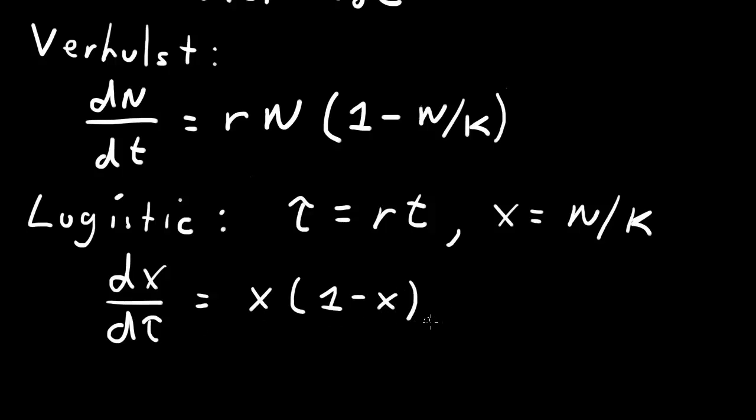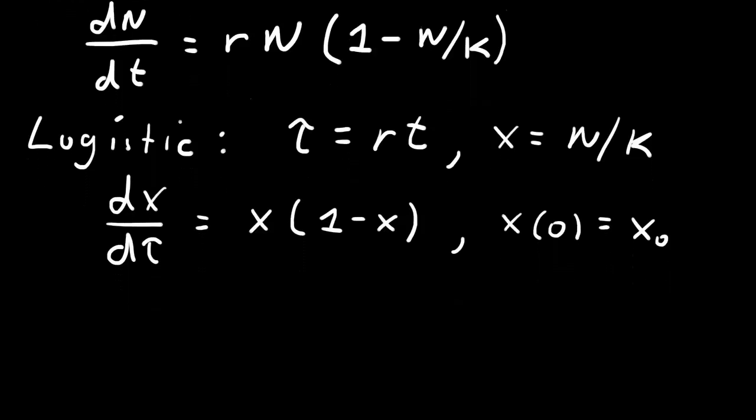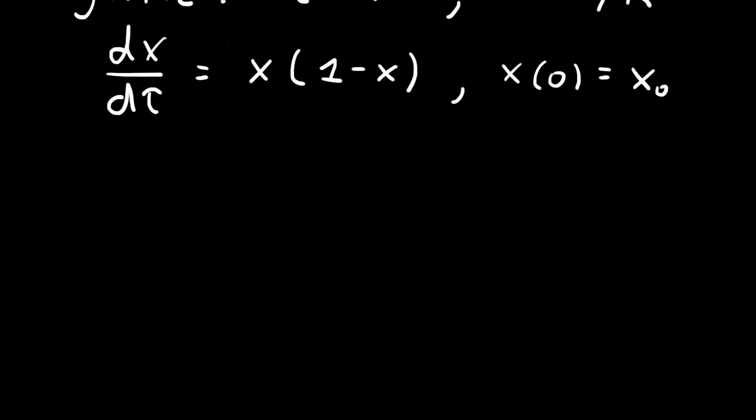We end up with the equation dx/dτ equals x times (1 minus x). And that's the logistic equation. To this we can add some initial condition x(0) equals x₀, where x₀ is typically some small positive number. That's the logistic equation.